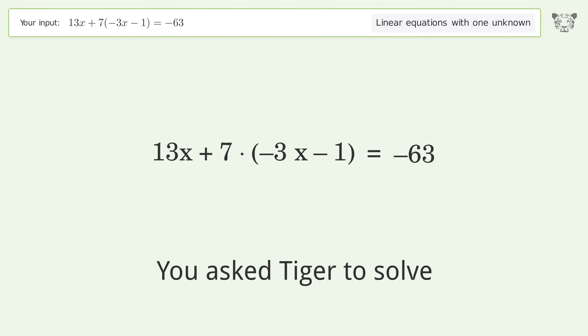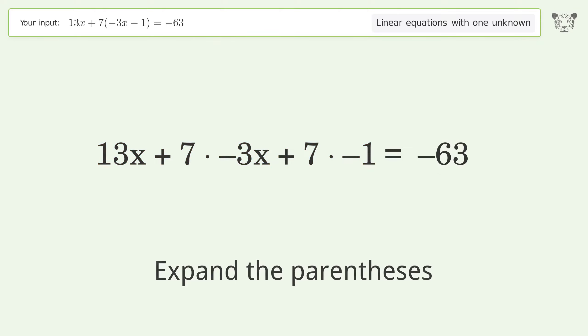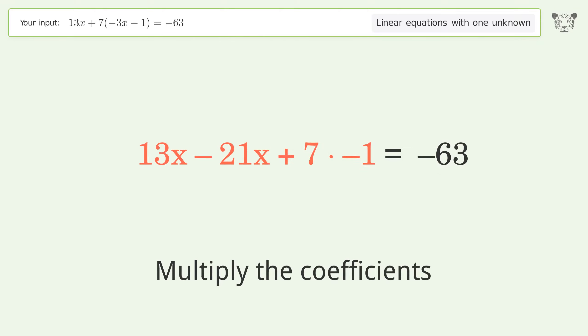You asked Tiger to solve this. This deals with linear equations with one unknown. The final result is x equals 7. Let's solve it step by step. Simplify the expression, expand the parentheses, multiply the coefficients, simplify the arithmetic.